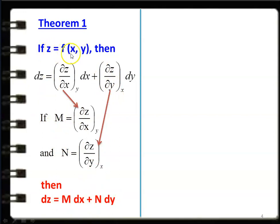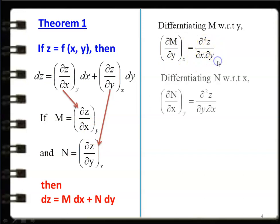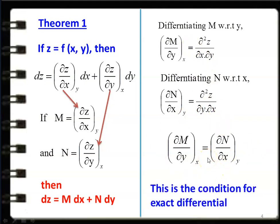When z is a function of x and y and dz = M dx + N dy, now differentiate M with respect to y. So M is (∂z/∂x) at constant y. Differentiating with respect to y: ∂M/∂y at constant x = ∂²z/∂x∂y. And differentiating N with respect to x: ∂N/∂x = ∂²z/∂x∂y. From these two equations, ∂M/∂y at constant x = ∂N/∂x at constant y. These two are equal, and this is the condition for exact differential.